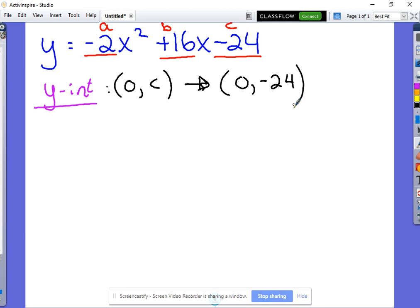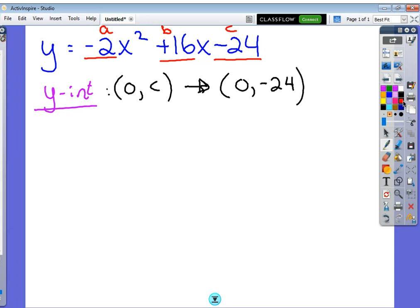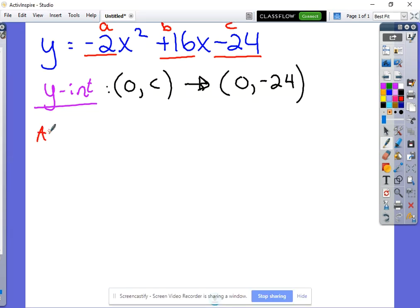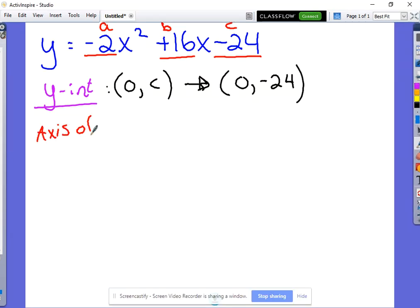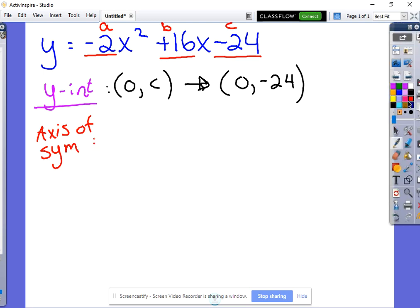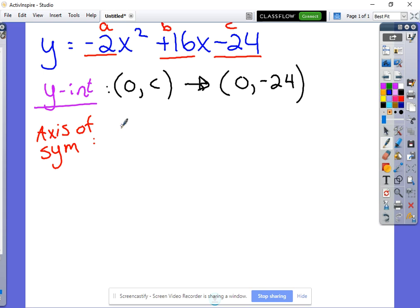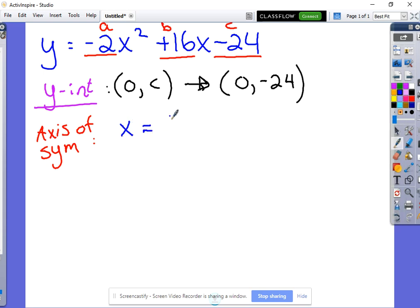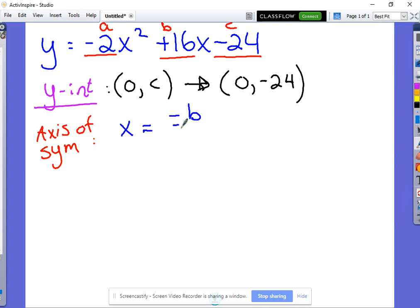Alright, next we can find that most important point is called the vertex. But in order to find the vertex, we have to start out by finding what's called the axis of symmetry. And that's that invisible line that cuts straight down through our parabola. And our formula for the axis of symmetry is x equals the opposite of b divided by 2a.